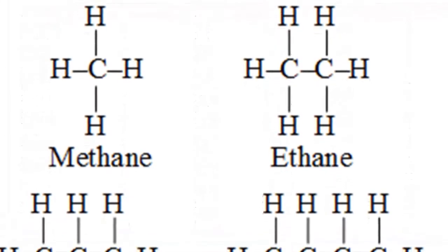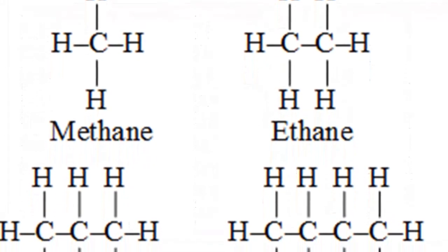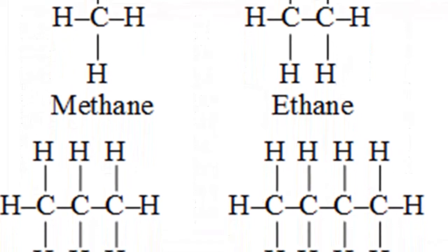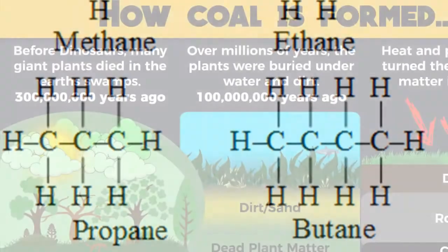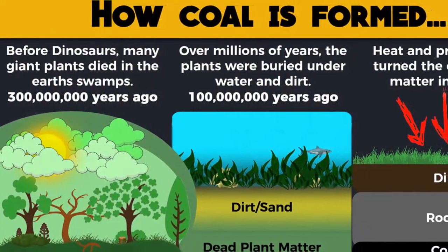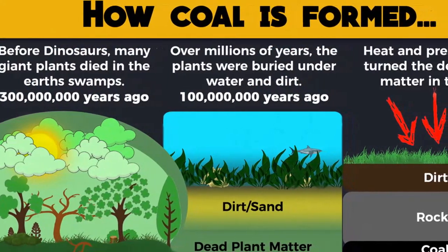Like coal, petroleum and natural gas are biological products derived from the remains of organisms. However, the environments in which they form are very different, as are the organisms.